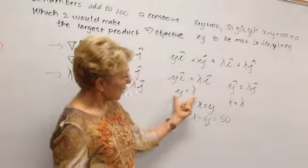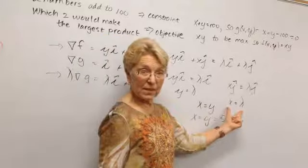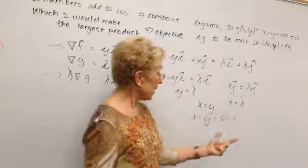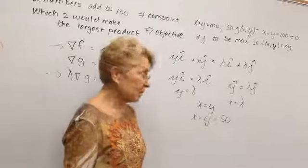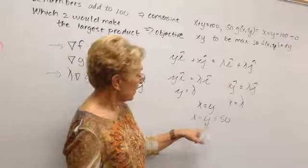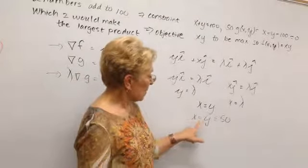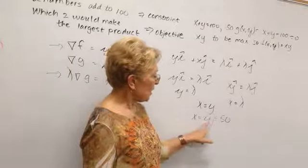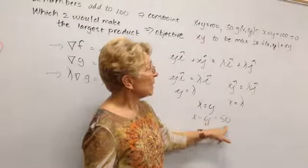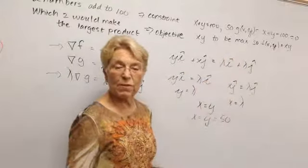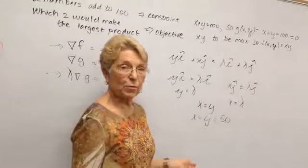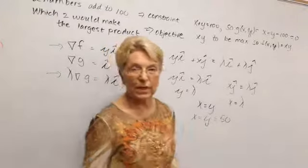So this means that y is equal to lambda, x is equal to lambda, and we're going to eliminate the middle end. So x is equal to y. Subbing back into the constraint function, we see that x equals y equals 50. And if we put this into our f function, we would get that maximum product. But here we're just practicing a technique.